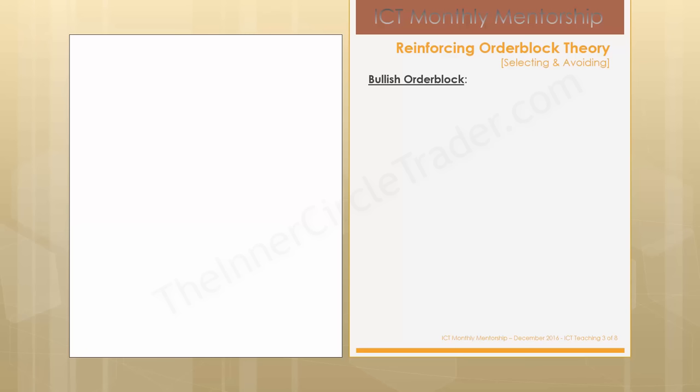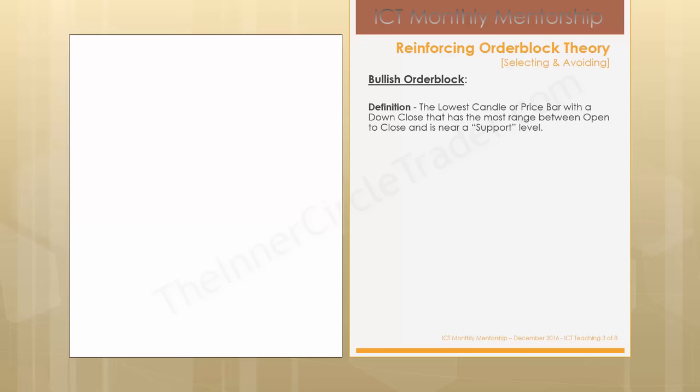Everything I say here, you'll just reverse for a bearish order block to save time. The definition of a bullish order block is the lowest candle or price bar with a down close that has the most range between open to close and is near a support level. Validation of a bullish order block is when the high of the lowest down candle or price bar is traded through by a later formed candle or price bar.